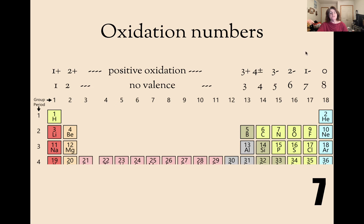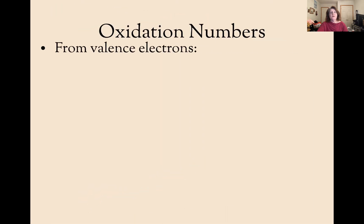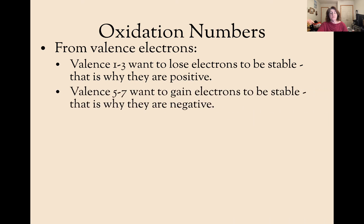Be sure those oxidation numbers are added to your periodic table. From the valence, a valence of 1 through 3 want to lose their electrons to become stable. That's why they're positive. A valence of 5 through 7 want to gain their electrons to become stable. That's why they are negative. A valence of 4 can go either way. It's just as easy to give 4 away as it is to get 4.